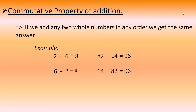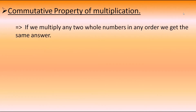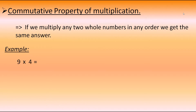Now let's take the commutative property of multiplication. It says that if we multiply any two whole numbers in any order, we get the same answer. Means, if we take two whole numbers, multiply them, and then interchange the places, we get the same answer. For example: 9 and 4. If we multiply them, we get 36. If we change the places and write 4 first then 9, we still get the same answer as 36.